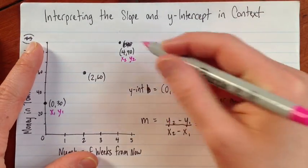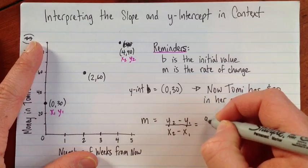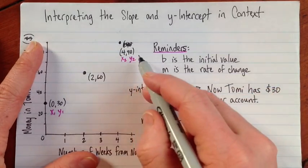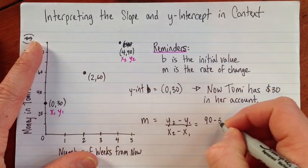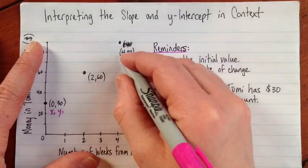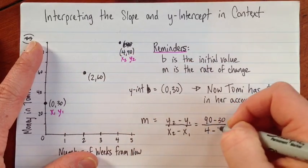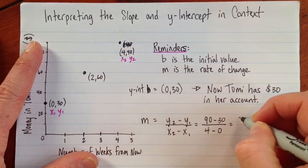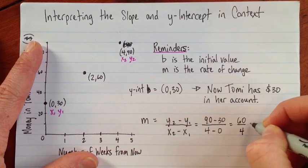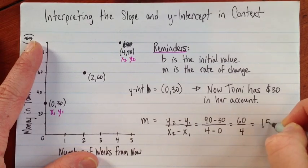So y2 is 90. Subtract y1 is 30. And for x2 is 4. Minus x1 is 0. So we've got 60 over 4. So it's 15.